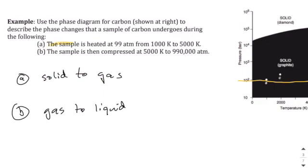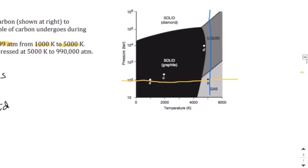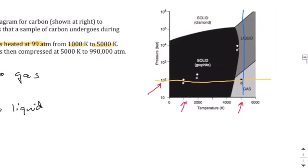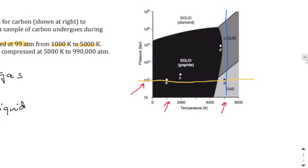So the first one is going from 1000 Kelvin to 5000 Kelvin at constant pressure. So we're starting at 99 atm, and this corresponds to that yellow line that I've put there, because that's about 100 atm or 100 bar, which is around 99 atm. And we're just going to go across from 1000 to 5000. And so you can see what happens is that corresponds to those two points A and B there. And what happens there is just the carbon will go from solid to gas.